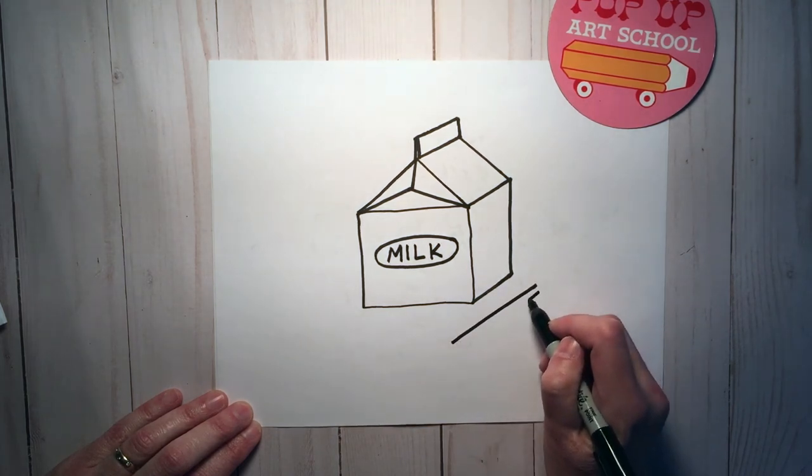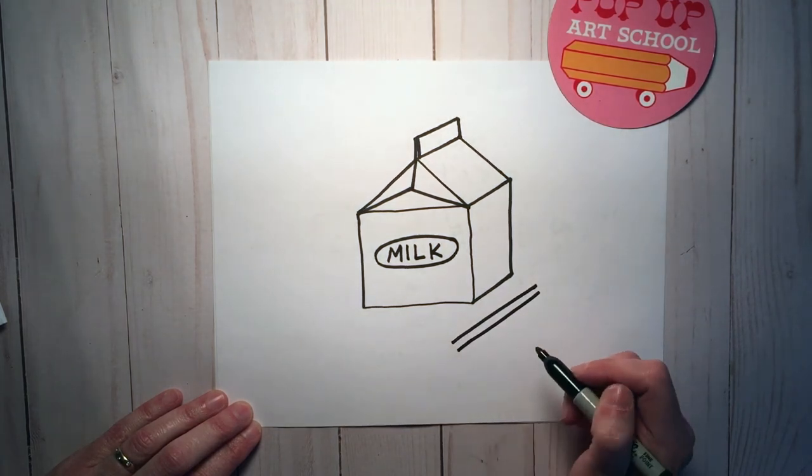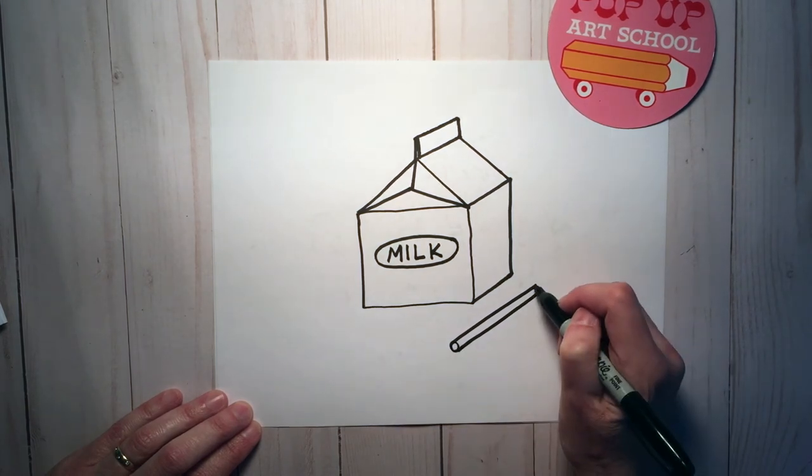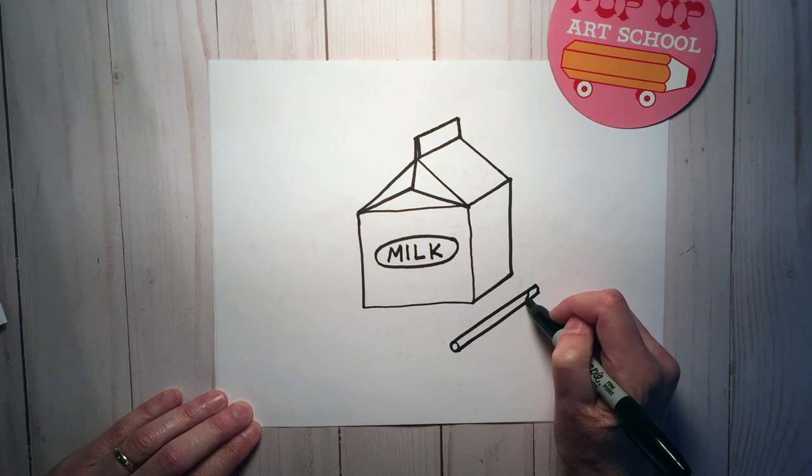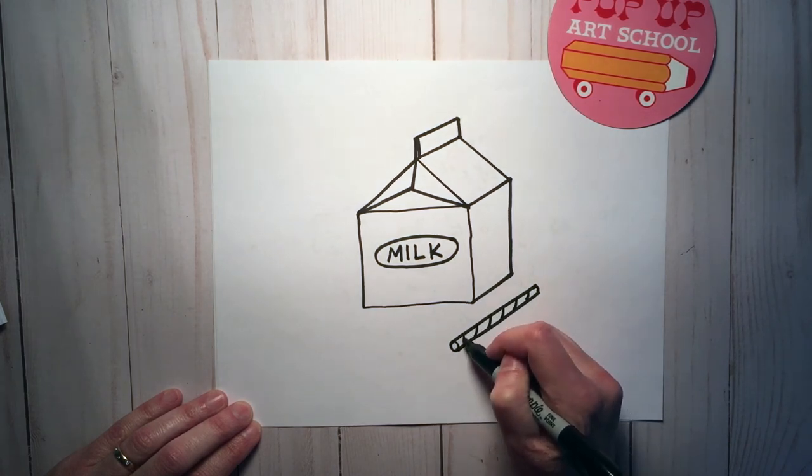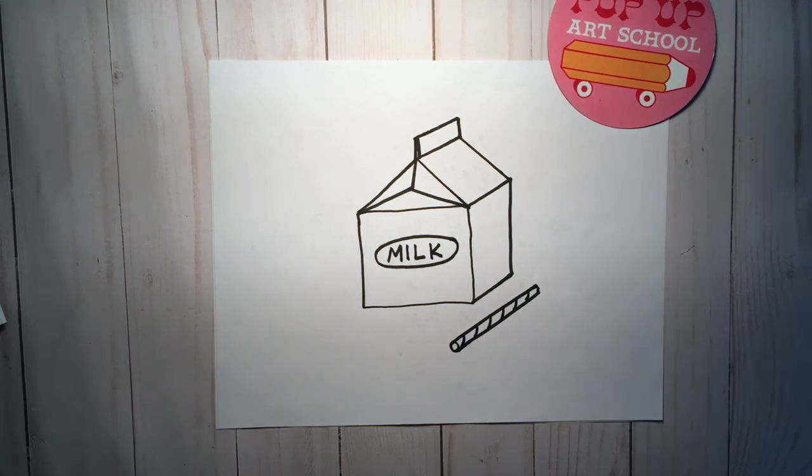And then I'm going to make a little straw, two parallel lines at an angle, an oval on one end and then a little curved line on the other and a little curved lines for stripes.